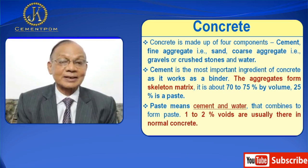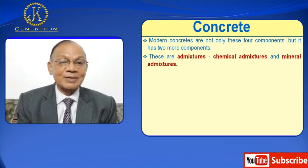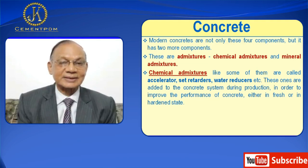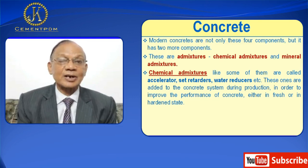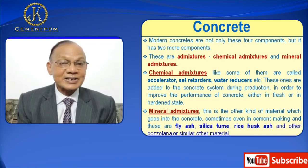Modern concrete is not only these four components but has two more components. These are admixtures — chemical admixtures and mineral admixtures. Chemical admixtures include accelerators, set retarders, water reducers, etc. These are added to the concrete system during production in order to improve the performance of concrete, either in fresh or in hardened state. Mineral admixtures are the other kind of material going into concrete, and sometimes even into cement making. These include fly ash, silica fume, rice husk ash, and other pozzolanic or similar materials. We will discuss about them later in detail.